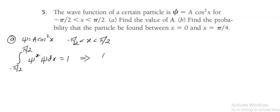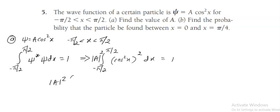We can write the integral from minus pi by 2 to plus pi by 2, taking the constant outside: A squared times cos squared x, the whole square dx, is equal to 1. So we get the integral from minus pi by 2 to plus pi by 2 of cos to the power 4x dx, equal to 1.